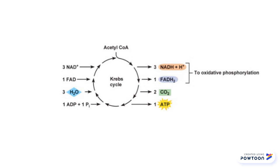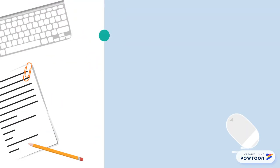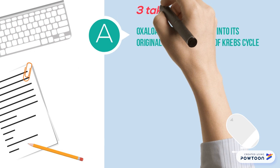What are the products that result from Krebs cycle? Well, it is three NADH molecules, one FADH2, two CO2, and one ATP per one acetyl-CoA compound. But Krebs cycle generates two acetyl-CoA compounds, so all the products are basically multiplied by two.